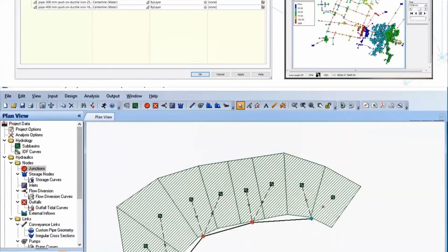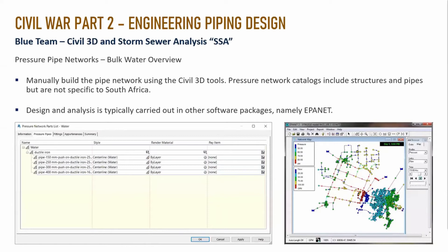For the pressure pipe networks — the bulk water overview — yet again we need to manually build the pipe networks inside Civil 3D tools. The pressure network does not contain categories for structures and pipes specific to South African standards, so you need to create those catalogs by hand. Design and analysis is typically carried out in other software packages like EPANET. Although Civil 3D does have pressure network capabilities, the analysis part is completely removed, requiring a separate tool.